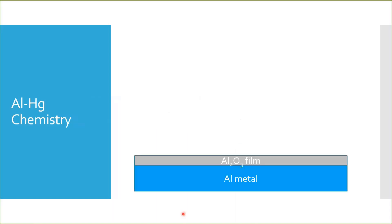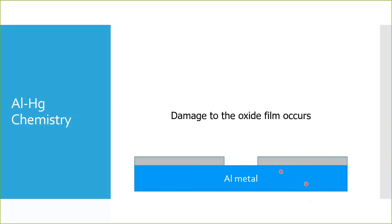This is a very simple diagram of what I think is happening. On a normal surface, the aluminum metal will eventually oxidize to form an aluminum oxide film. This film is thermodynamically very stable. Occasionally though, there will be some sort of damage to this oxide film and the bare metal will be exposed. This will be mechanical or chemical in nature.